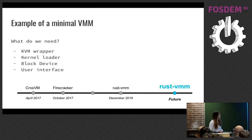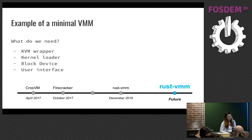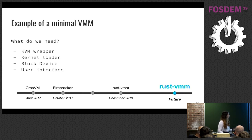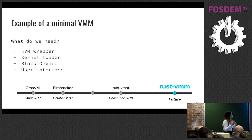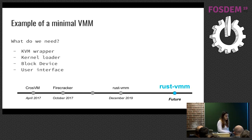We're going to go over an example of a VMM you can build with rust-vmm components. With the current stage of rust-vmm, you can't really build anything complete because there aren't enough crates yet. So we're going to build a minimal VMM — not exactly minimal, but more to prove a point about the structure of rust-vmm. Our VMM is going to run on top of KVM, so we'll need KVM wrappers, a kernel loader, a block device for our root file system, and a user interface.